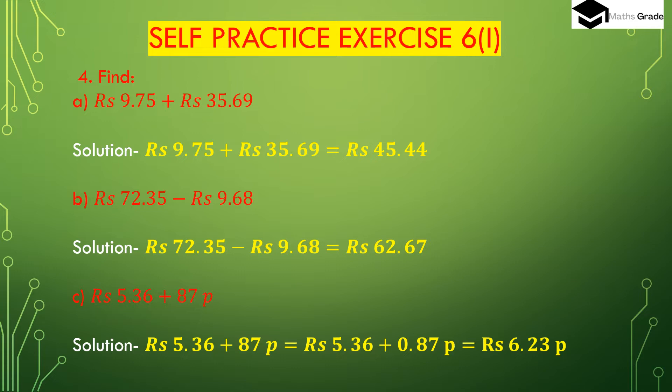Now we solve question number 4. Question number 4 is to find the value of this amount in addition and subtraction. First, part (a) is 9 rupees 75 paise plus 35 rupees 69 paise. We have to add these two amounts. First we add the paise column — that is 75 paise and 69 paise.